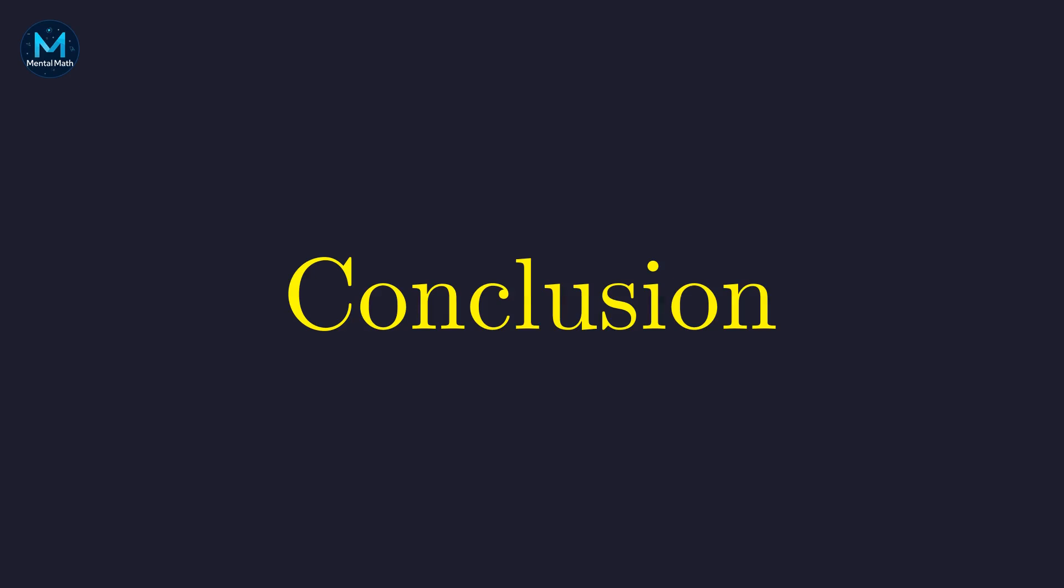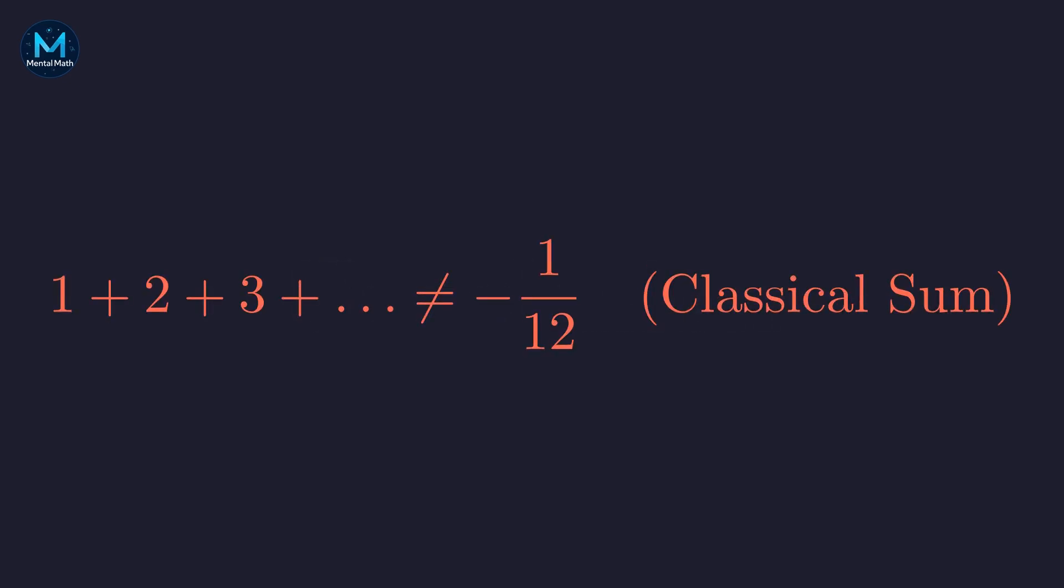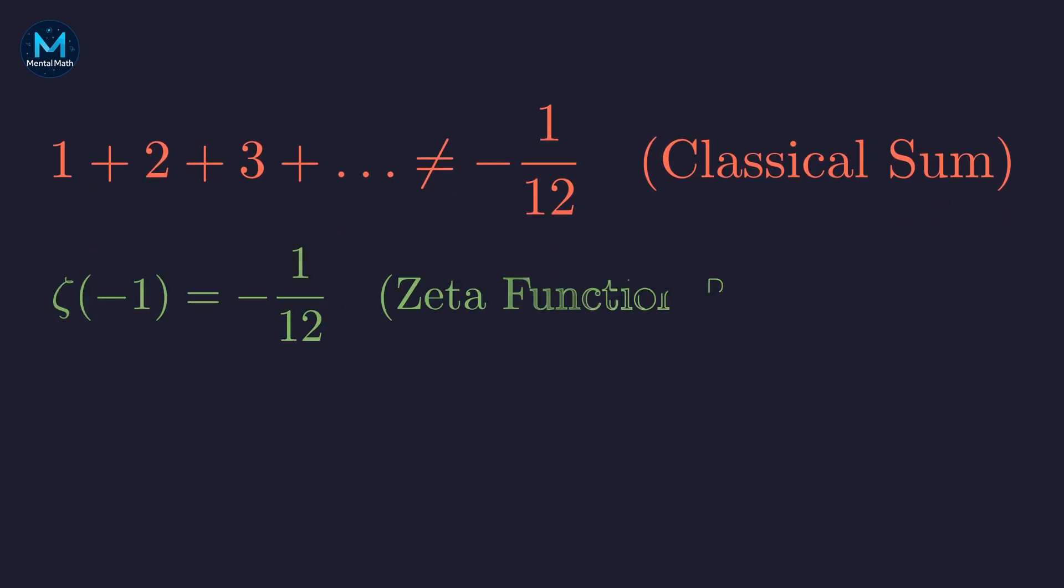So, what have we learned? It is fundamentally incorrect to say the sum equals negative 1 twelfth in the traditional sense. The series diverges. A standard equality sign is misleading. The correct statement is that the value of the analytically continued Riemann zeta function at negative 1 is negative 1 twelfth. This value found through a process called regularization is not just a mathematical curiosity. It appears in physics, in areas like string theory and the study of the Casimir effect. If you enjoyed this deep dive into one of mathematics's most fascinating paradoxes, hit that Like button and subscribe to keep exploring these beautiful ideas together!